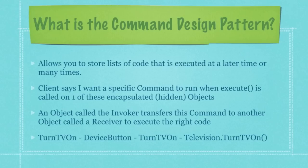On top of that, normally with the command design pattern there's a capability to undo commands. Basically what happens is the client or application part of your program says it wants a specific command or list of code to be executed whenever a method called execute is called on one of these encapsulated hidden objects. Then an object called the invoker, whenever it is invoked to perform a command, transfers this command to another object called the receiver, and the receiver has the actual code that you want to execute.